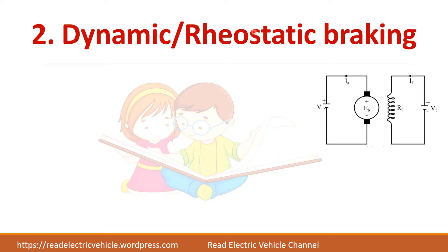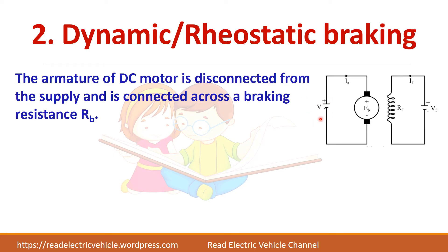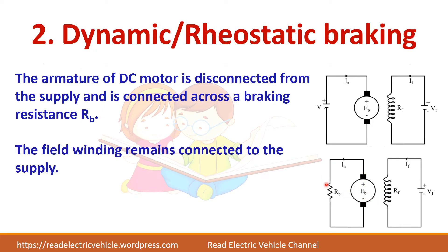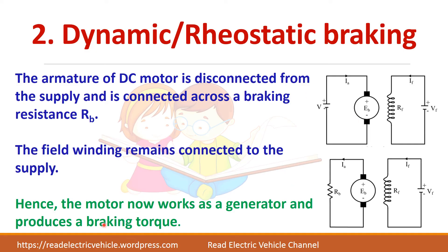Next is dynamic or rheostatic braking. Here the motor is fed from a DC supply with a field winding connected to a DC supply. In dynamic or rheostatic braking, the supply is removed and the motor is connected across a braking resistor — that is why it is called rheostatic braking. Under normal operation, electrical energy is supplied and the machine acts as a motor. Once the supply is removed, the motor acts as a generator and all the energy is wasted in the resistance as heat, producing the braking torque.